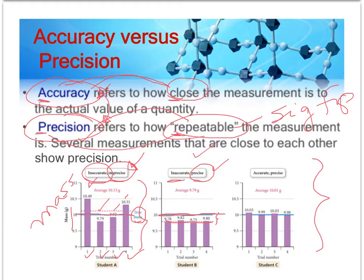Finally, the last graph — the one on the far right — has values that are very repeatable, very close to each other. So they are precise. And they're also very close to the blue line, which is the known value, so they're also accurate. It's really important that you understand how to interpret different graphical representations of accuracy and precision. I'm sure that will probably show up on a quiz or a test.